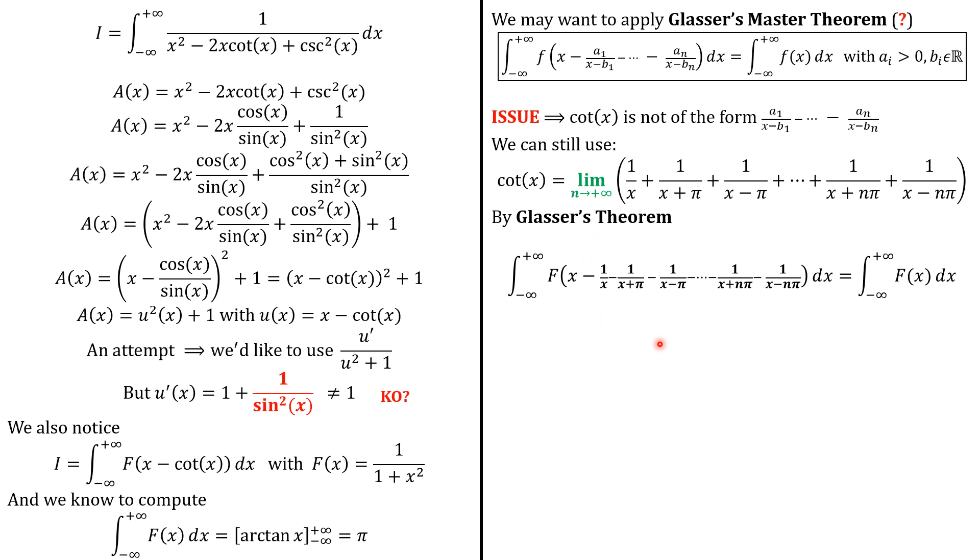Next, we apply the limit as n tends to infinity. Because this limit exists, we can switch the integral and the limit. So we push the limit under the integral. Given this result, we know that this limit is going to be f(x - cot(x)). And we know that I equals this quantity.